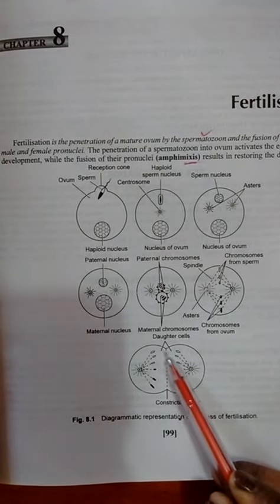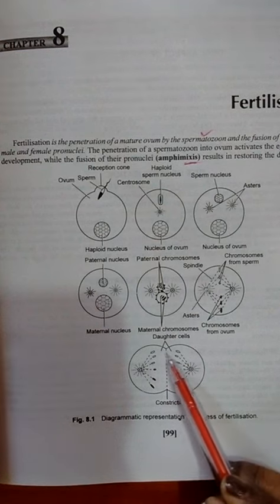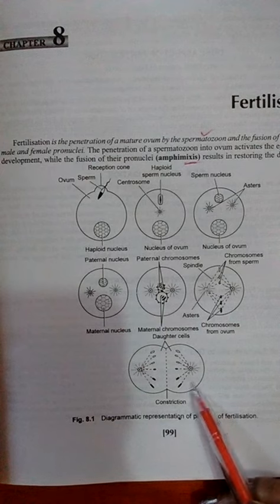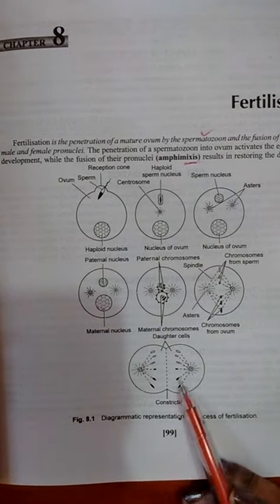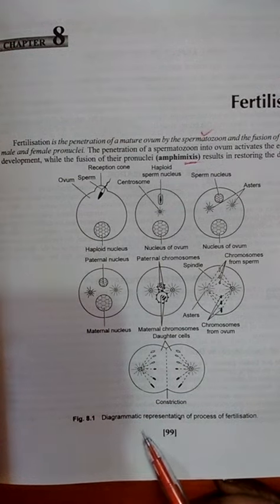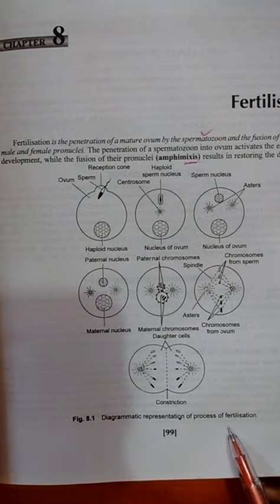Here the constriction is forming two cells. One cell divides into two cells in the process of cleavage. This is the diagrammatic representation of fertilization.